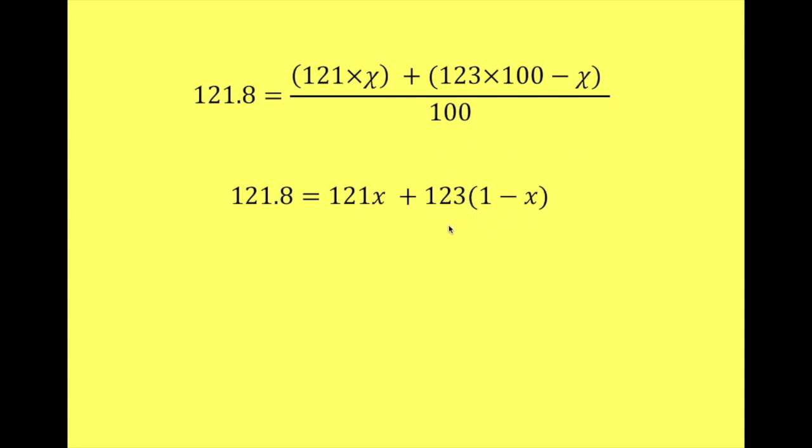And then we're going to times out this bracket. And when we do that, we get 123 times 1 and 123 times x. So we're going to end up with 123 minus 123x. We haven't looked at this bit yet.